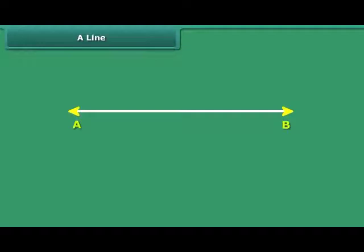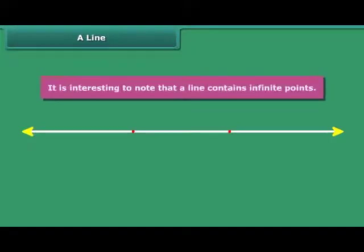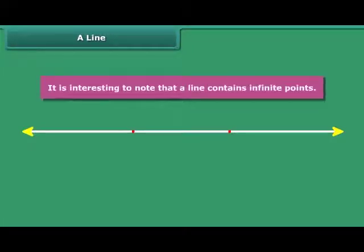Frequently, a line is also given by single letters L, M, N, etc. We can represent a line or line segment by two points. It is interesting to note that a line contains infinite points.